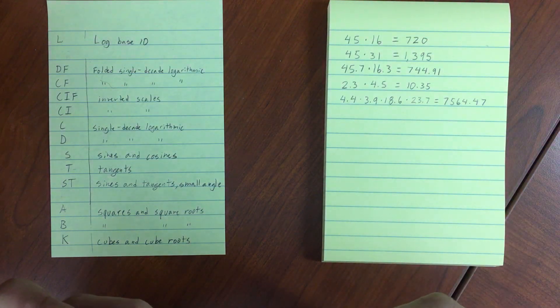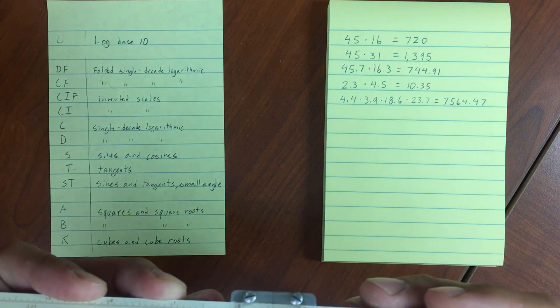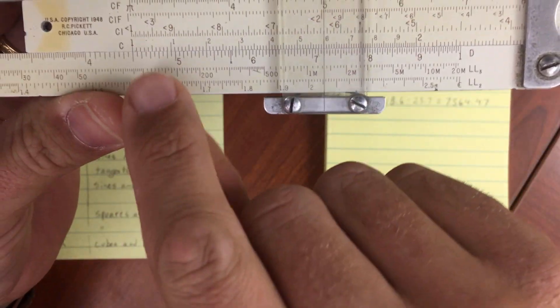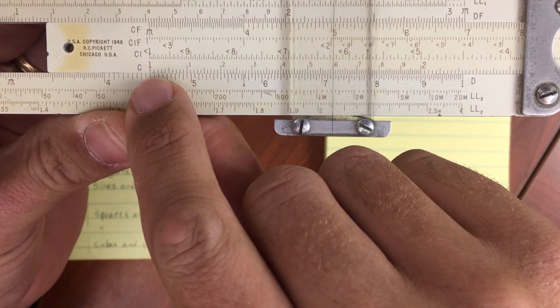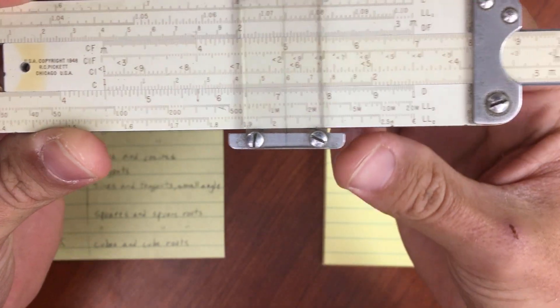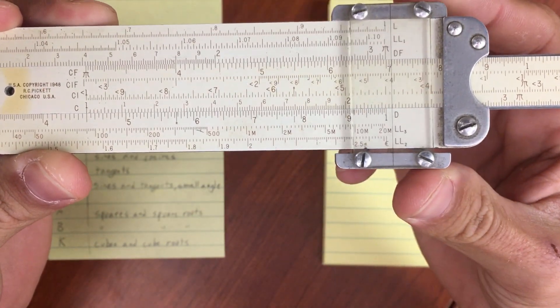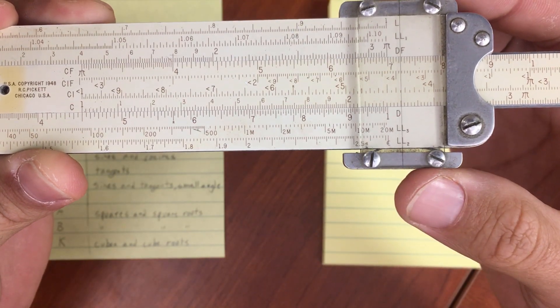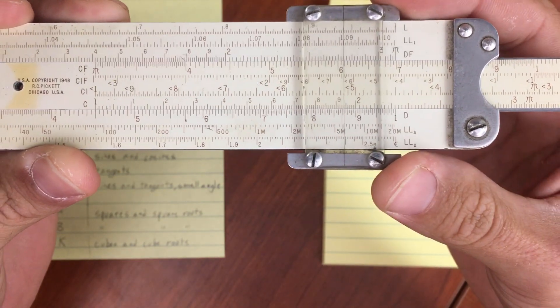In this case, it does turn out to be exact. Alright, our second number, 45 times 31. We're already at 45 here. So our 1 on our C scale has moved to 45. However, we don't have enough room off of the end to go to 3.1 on our C scale. So what do we do?